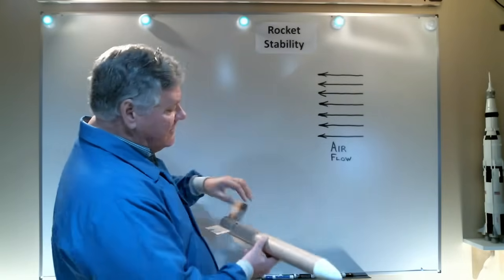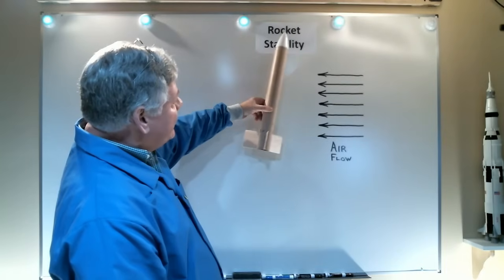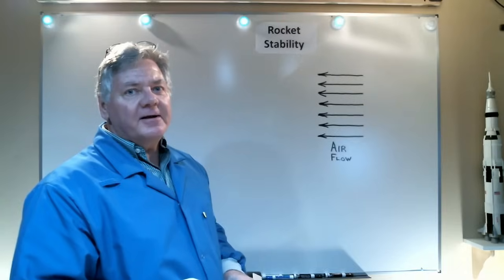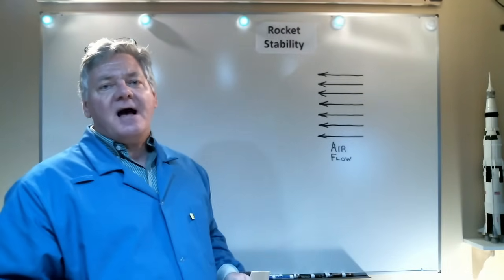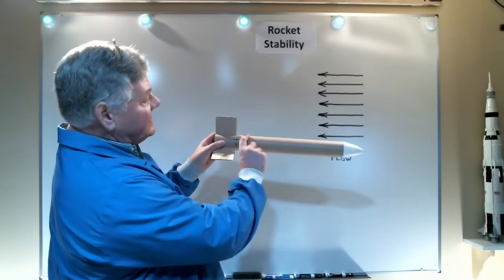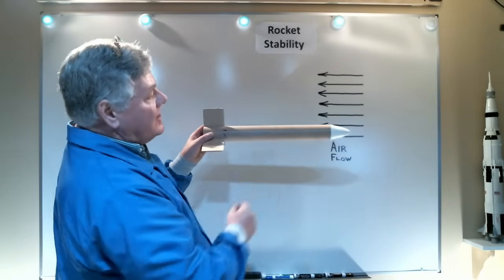Now an unstable rocket will have a tendency to want to fly sideways or even fly backwards, which is disastrous for rocket flights. Now, let's talk about some of the basic components of a rocket. First of all, we have the fins, we then have a cylindrical body tube, and a nose cone.